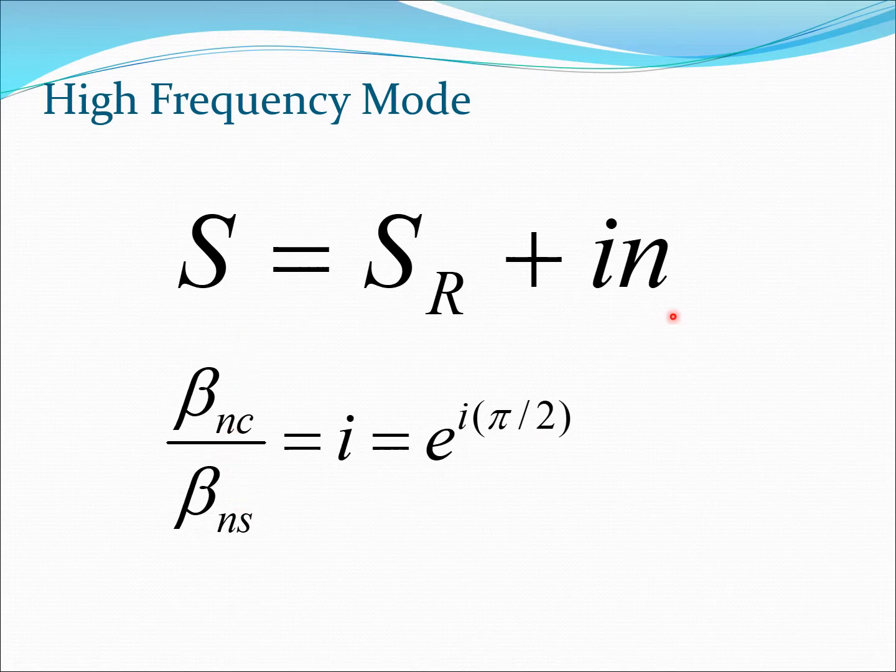For this particular equation we can write beta NC by beta NS is i, and that is equal to e to the power i pi by 2. You recall that this relation can be shown to be veracious by using De Moivre's theorem, that is e to the i theta equals sine theta plus i cosine theta. We are going to use these two equations in our next slide.